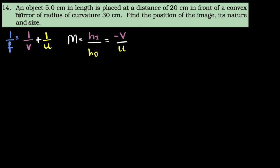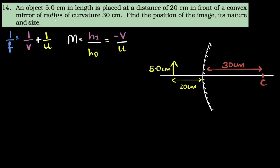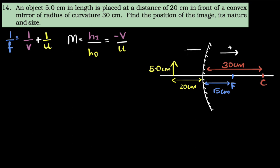Here's another problem from NCERT. We are given a convex mirror with an object of 5 centimeter height kept 20 centimeters in front of it. This time we are given the radius of curvature — the distance from the center to the mirror — which is 30 centimeters. Focal length is always half of the radius, so the focus is between the center and the pole: that gives us 15 centimeters. The same sign conventions apply: object to the left, right side positive, left side negative, above positive, below negative.